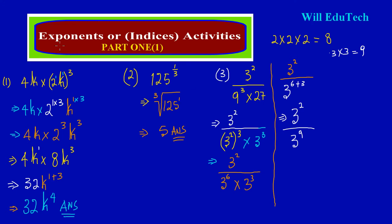From here, since I have the same common base and I'm now dividing indices of the same base, I'm simply going to subtract my powers. I have common base 3, and this is 3 raised to the 2 in my numerator, simply subtracting the power in my denominator. So this implies I have base 3 raised to 2 minus 9, which leaves us with negative 7.